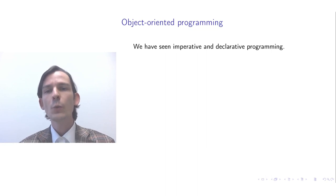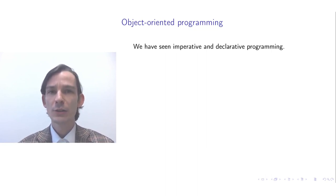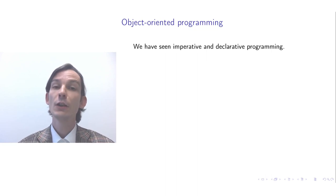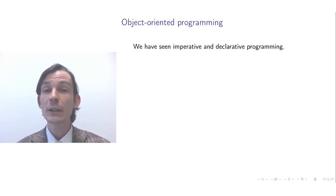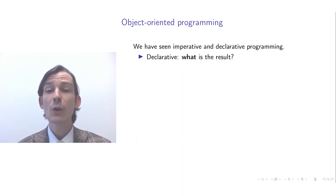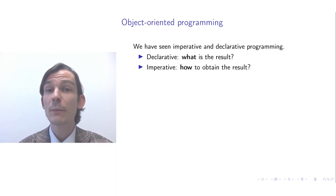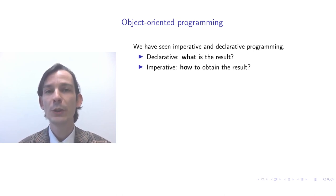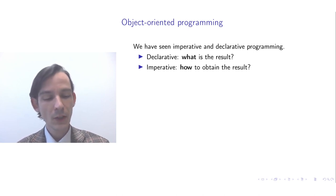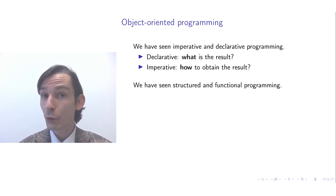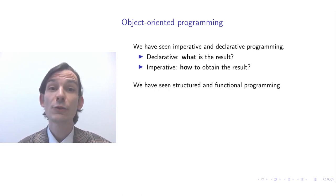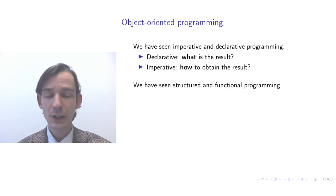We have already seen in the past weeks the notions of imperative and declarative programming. To quickly recall: declarative programming is all about describing what is the result of a computation, while imperative programming is all about describing how the result is to be obtained. Furthermore, we have seen control-structured programming and functional programming, the concepts thereof at least.